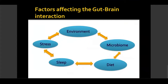Now that we understand the basic physiology of the brain-gut system, let's go into what factors affect this gut-brain interaction. There are many factors; these are some of the most important ones that we can intervene on in our patient population. The environment is a key factor, including social environment and dietary influences.